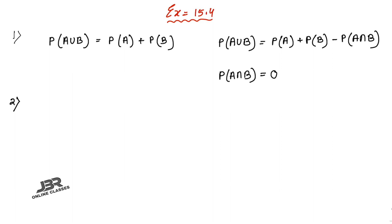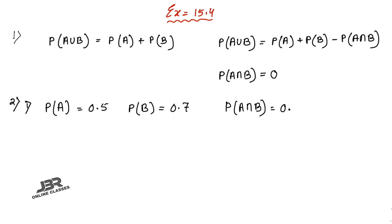Number two: check whether the following probabilities P(A) and P(B) are consistently defined. Here P(A) equals 0.5, P(B) equals 0.7, and P(A∩B) equals 0.6. P(A∩B) cannot be greater than P(A) or P(B), but here 0.6 is greater than 0.5.